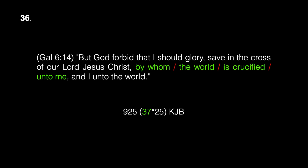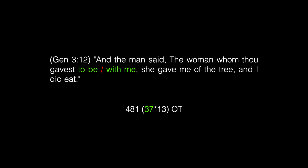The thirty-sixth occurrence of crucified is in Galatians 6:14: 'But God forbid that I should glory save in the cross of our Lord Jesus Christ by whom the world is crucified unto me and I unto the world.' The phrase 'by whom,' the phrase 'the world,' the phrase 'is crucified,' and 'unto me' combined appear 925 times in the King James Bible. Moving to Genesis 3:12 — here the man blames the woman. Verse 12: 'And the man said, The woman whom thou gavest to be with me, she gave me of the tree and I did eat.' The phrase 'to be' combined with the phrase 'with me' appears 481 times in the Old Testament, which is 37 times 13.